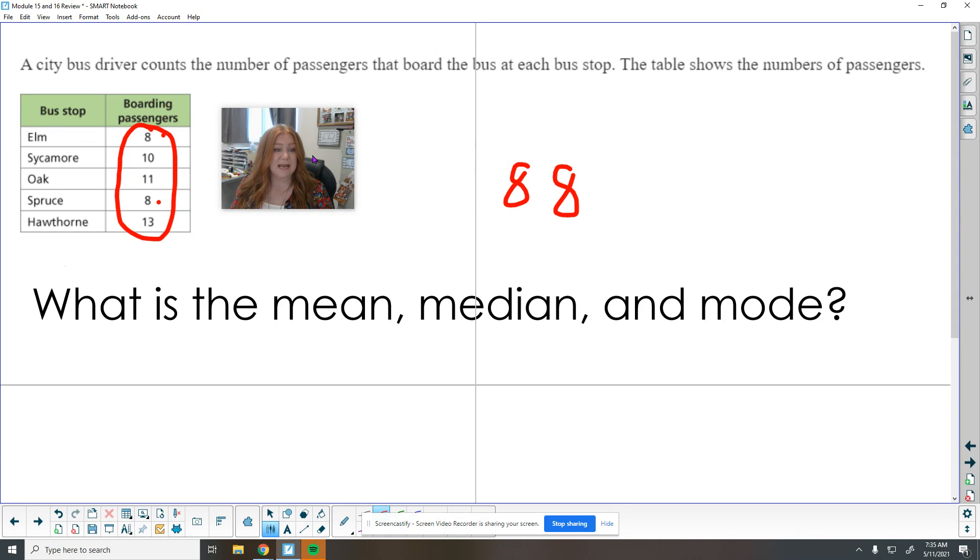So 8, 8, 10, 11, 13. To find the mean, we want to add these all up. So here's 16 plus 10 is 26, 11 more is 27 and 13 makes 40 divided by five.